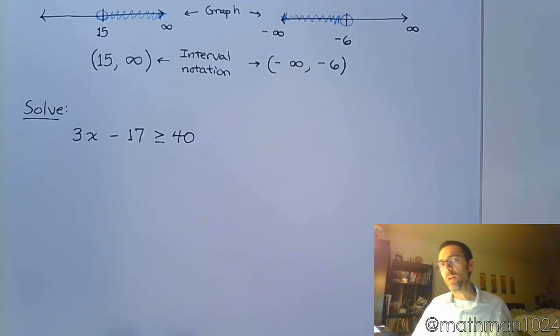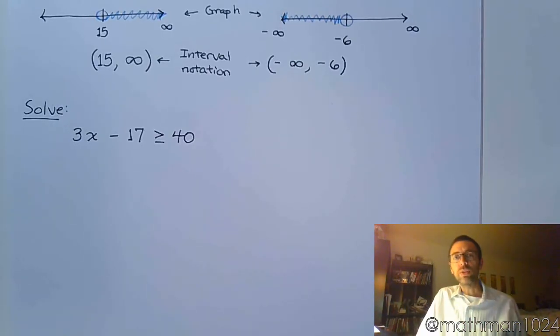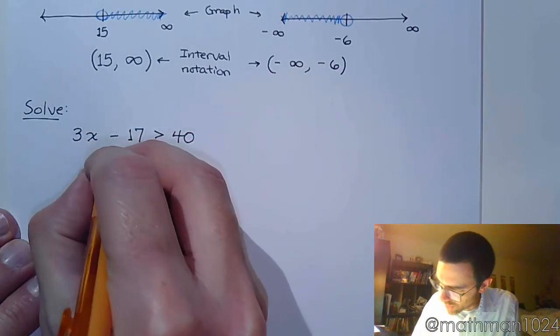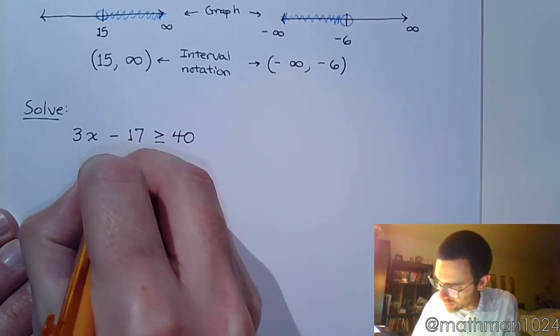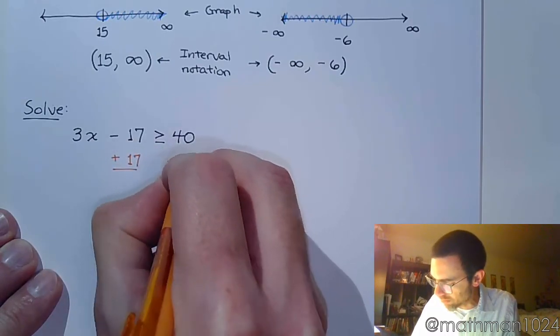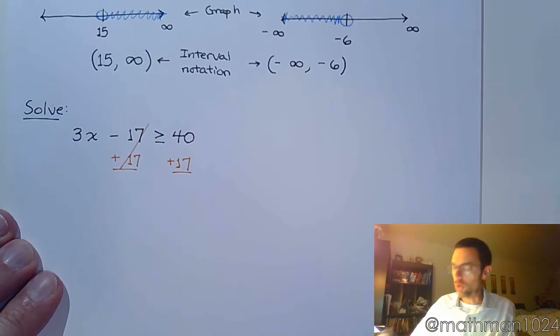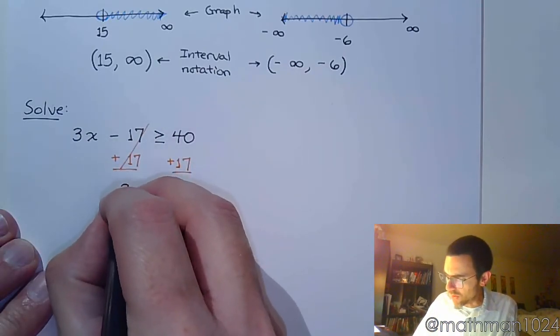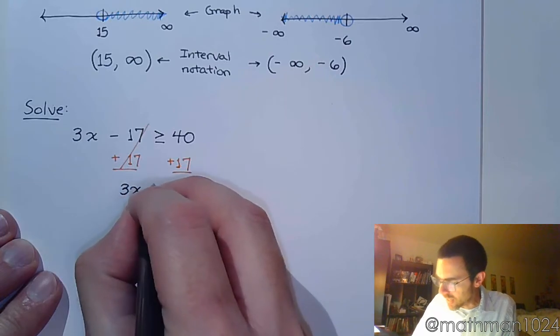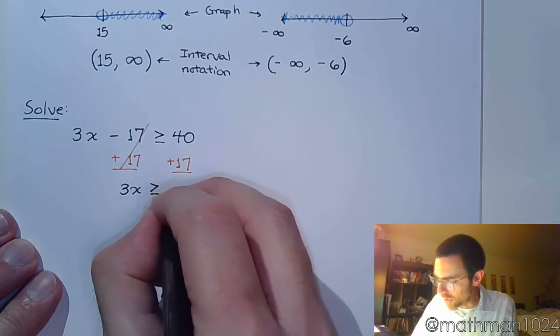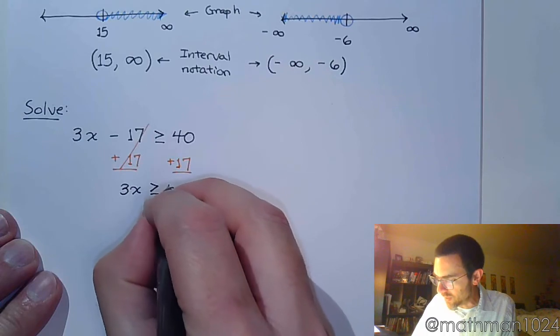Now remember what I said at the top of this video. We solve inequalities in much the same way that we solve equations. So if this were an equal sign instead of an inequality, think about what you would do to get x by itself. The first thing would be to add 17 to both sides. And adding 17 isn't going to set off any alarms where we have to change the direction of the inequality, so it's going to stay as greater than or equal to 57.